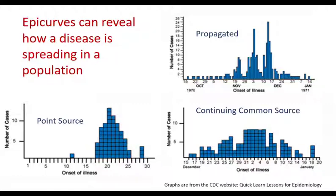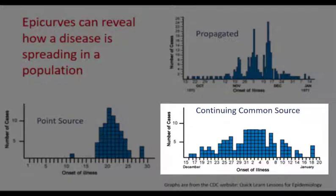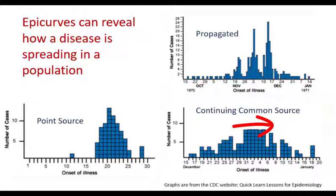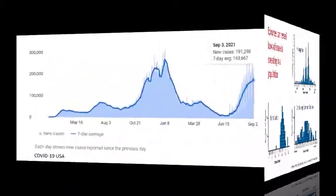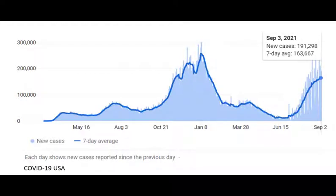Or if that pool isn't sanitized pretty soon, it could become a continuing common source for infection, in which case there's going to be a fairly constant number until the source is taken care of. Diseases that are propagated — that is, spread from person to person — typically show a rise and fall in cases. Now you try it: what method of spread does this graph show for COVID-19 in the U.S. since February of 2020? If you said propagated, that's correct.